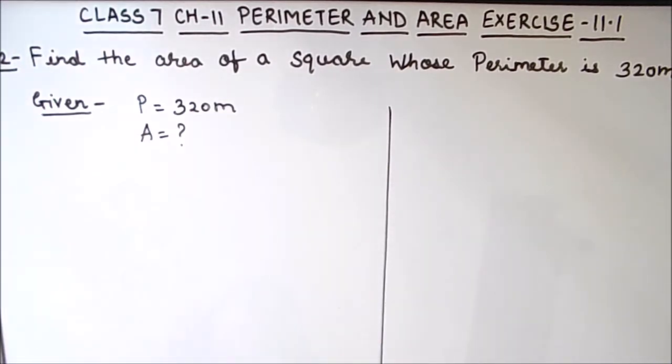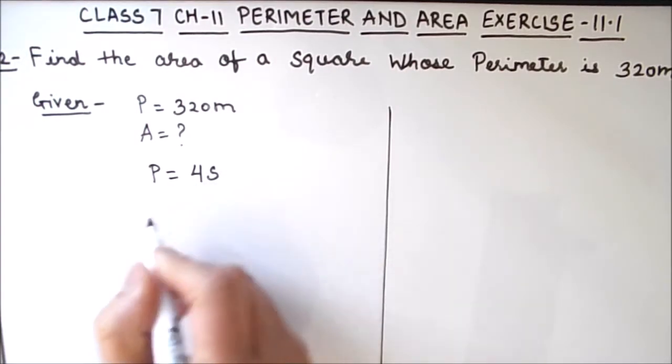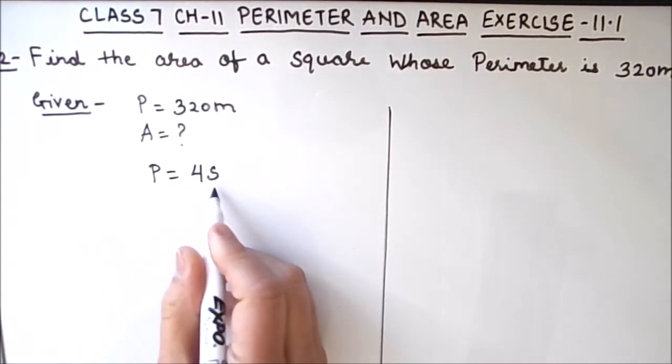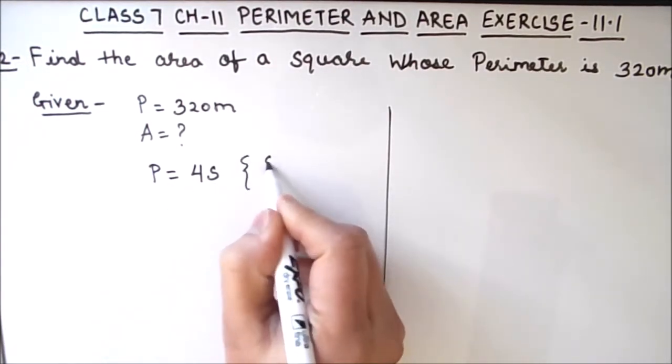For finding the area we need the side length of the square. Formula for perimeter of square is 4 times s, where s is the side length.